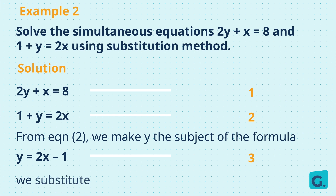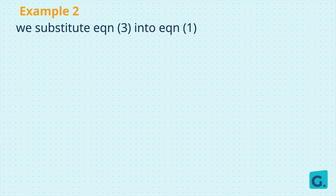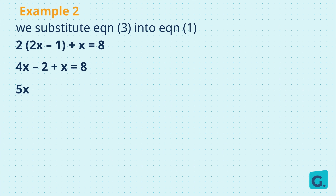Then we substitute equation 3 into equation 1. Wherever we have the value of y, we write 2x minus 1. Our equation becomes 2 bracket 2x minus 1 close bracket plus x equals 8. Multiplying 2 with everything in the brackets, we get 4x minus 2 plus x equals 8, which simplifies to 5x minus 2 equals 8.